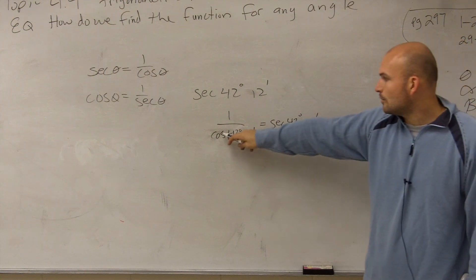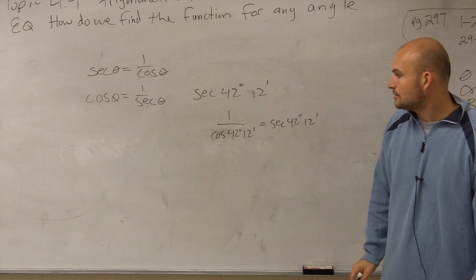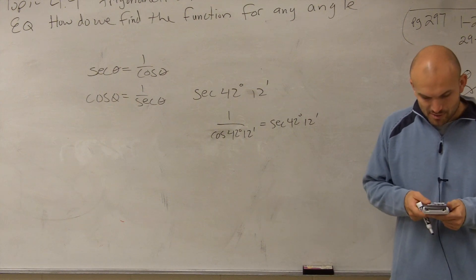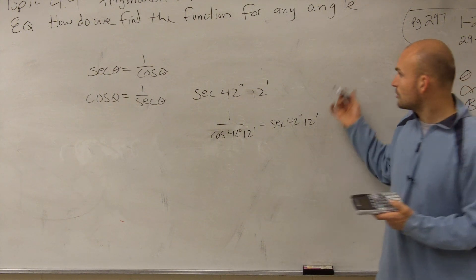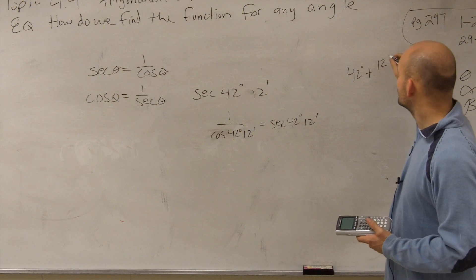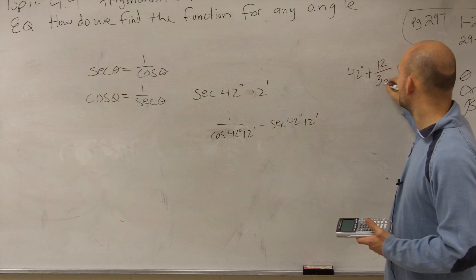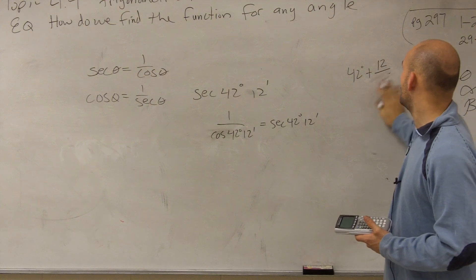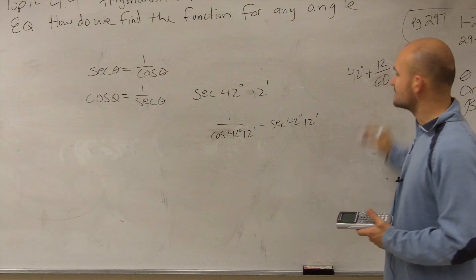Now, can I determine what 1 over cosine of 42 degrees and 12 minutes is? Yeah, that's in my calculator. So you can plug that as is, or remember, you can do 42 degrees plus 12 over 60.